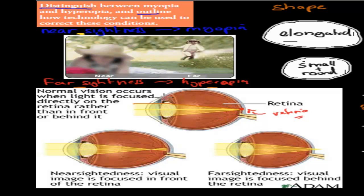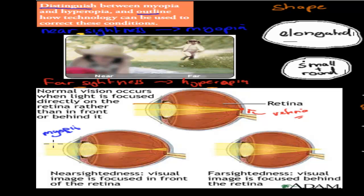When it comes to nearsightedness, this is myopia. In myopia, something has gone wrong — the lens, cornea, or eyeball might be different. What's happening is the lights are entering but they are meeting too far in front of the retina. So that's myopia: if your focal point is too far in front of where the retina is meant to be.